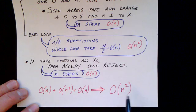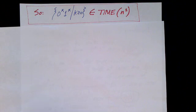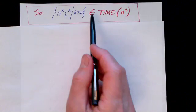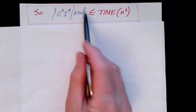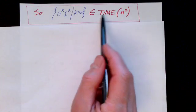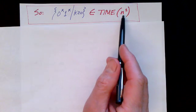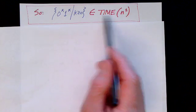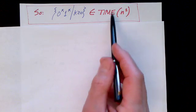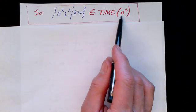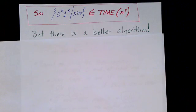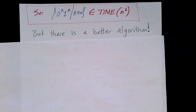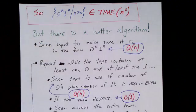We can say the complexity of this algorithm is N squared. By giving that algorithm, we have shown that this problem is a member of the set of N squared time problems — we've proven it's in this class because we provided an algorithm that runs in order N squared time. But it turns out there's another algorithm, a better algorithm in the sense that it's faster, to solve the same problem. Let's take a look at this algorithm and analyze it.